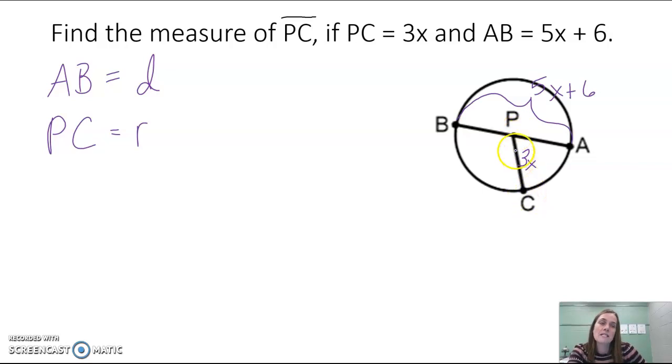And then PC is a radius because it goes from the center. One of its endpoints is the center, goes out to the edge of the circle. It goes to a point on the circle. So what we remember is that the diameter is equal to 2 times the radius.